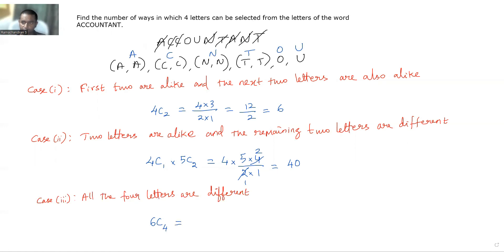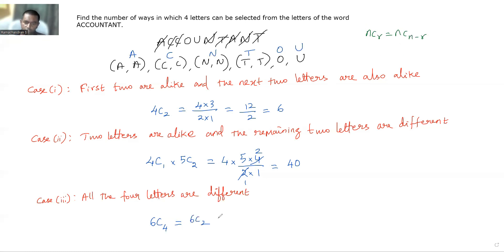The number of ways to select four different letters from six is 6C4. Using the property nCr = nC(n−r), 6C4 = 6C2 = (6×5)/(2×1) = 15.